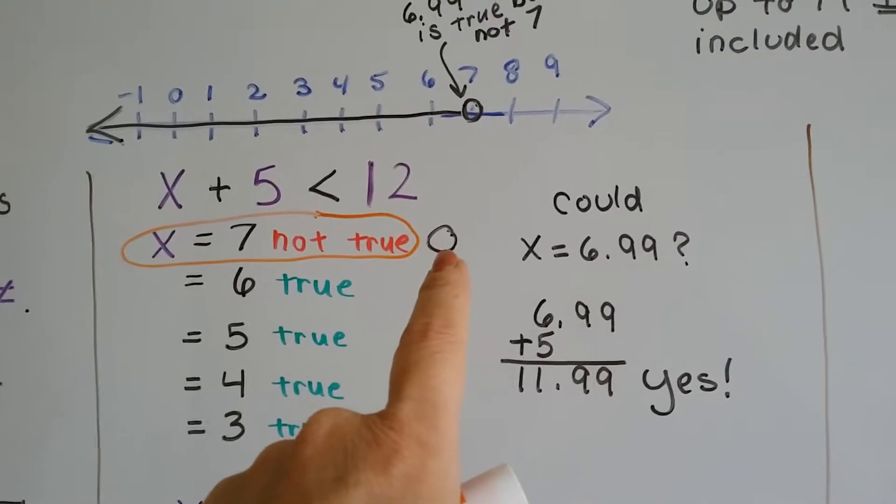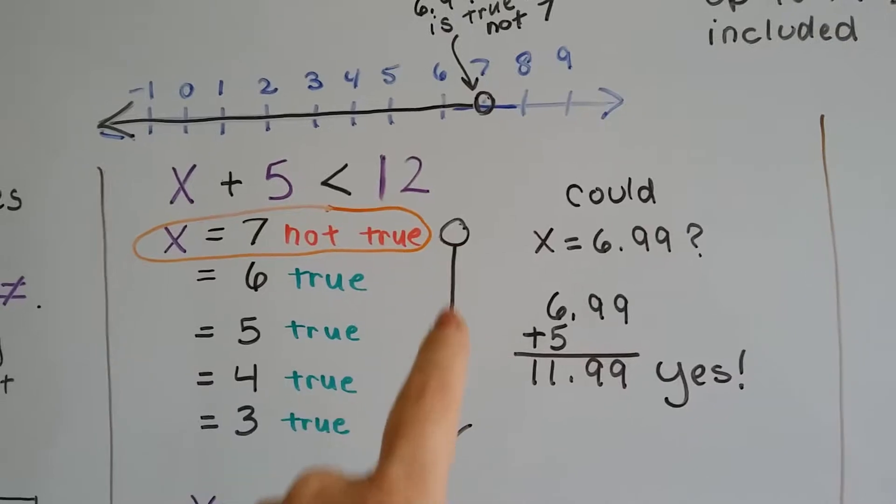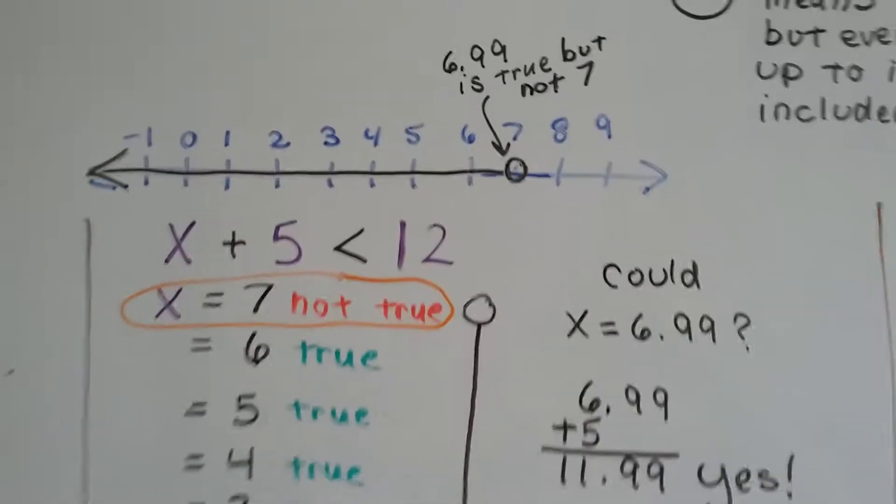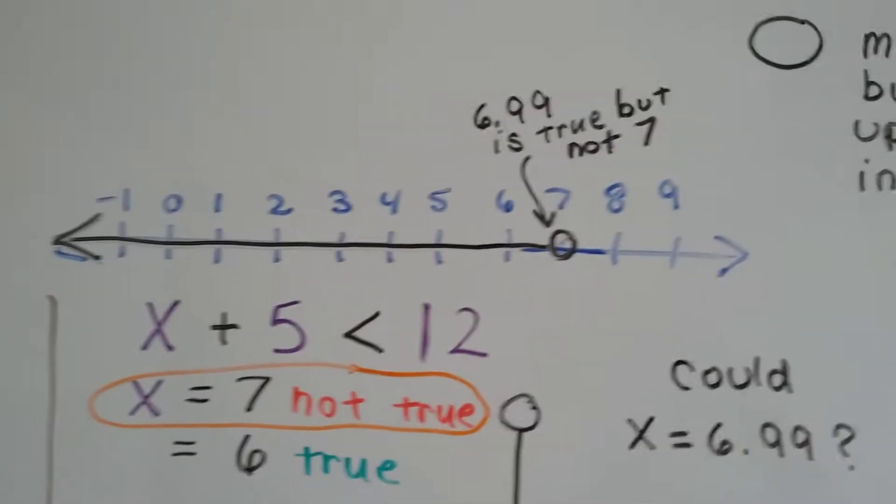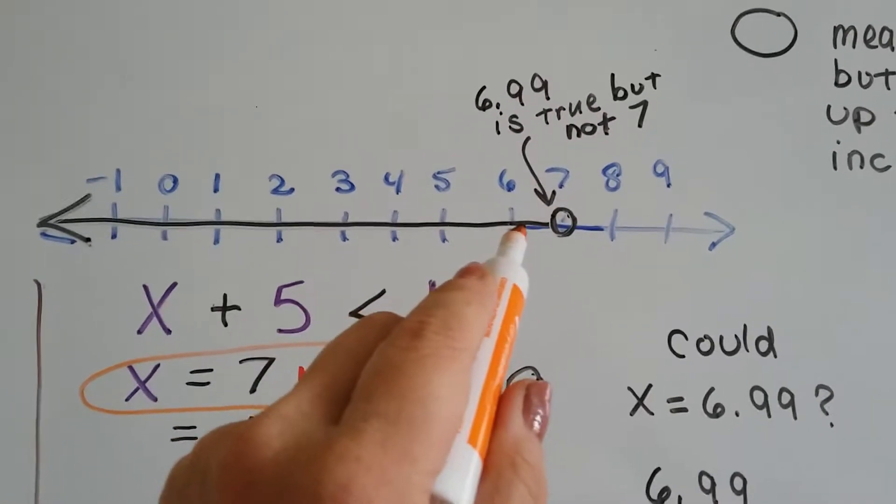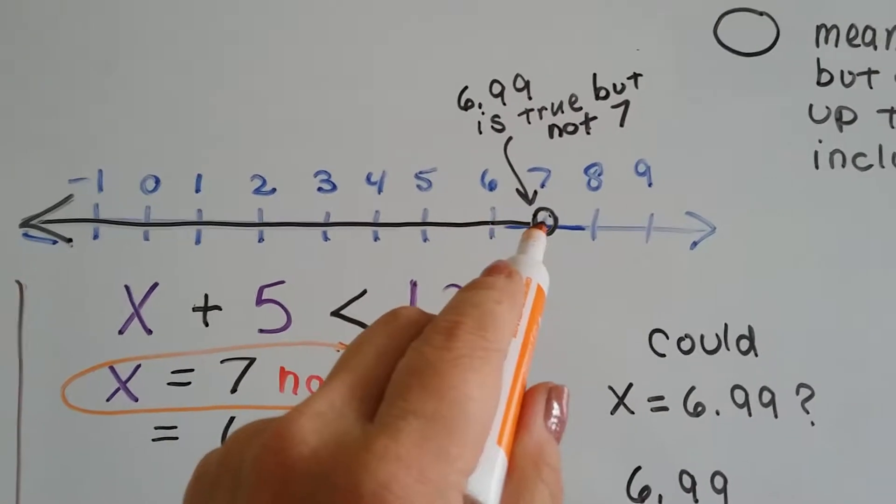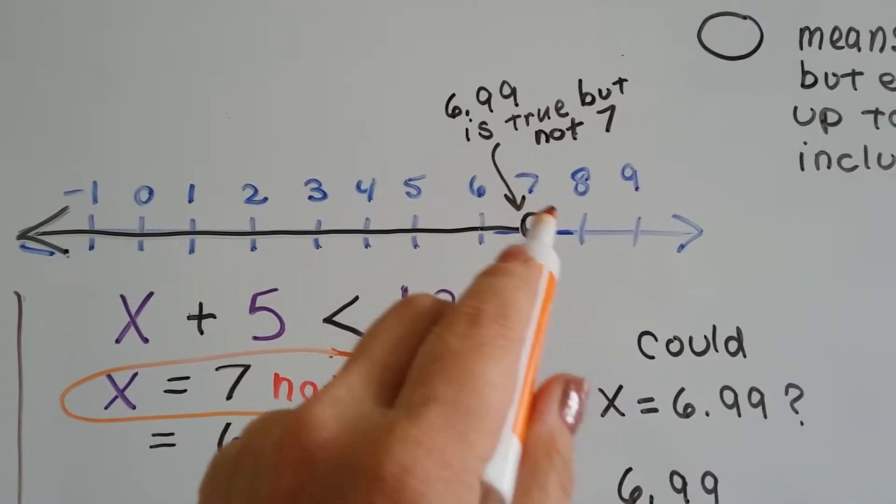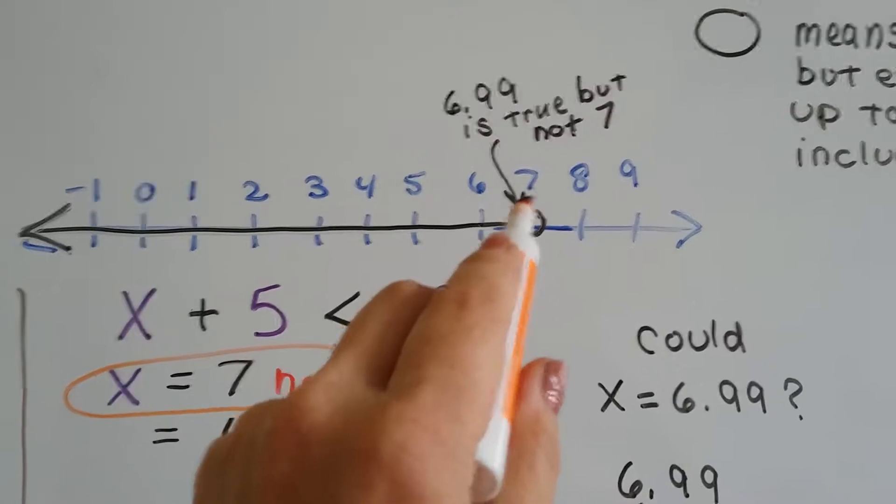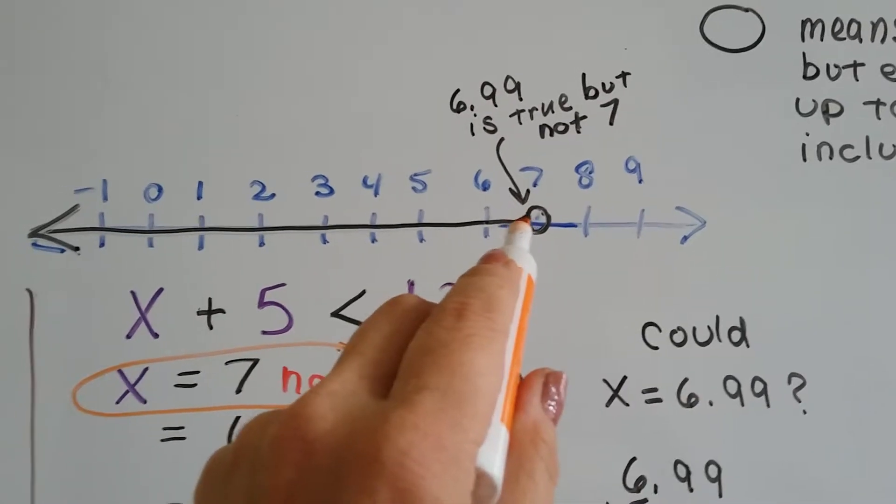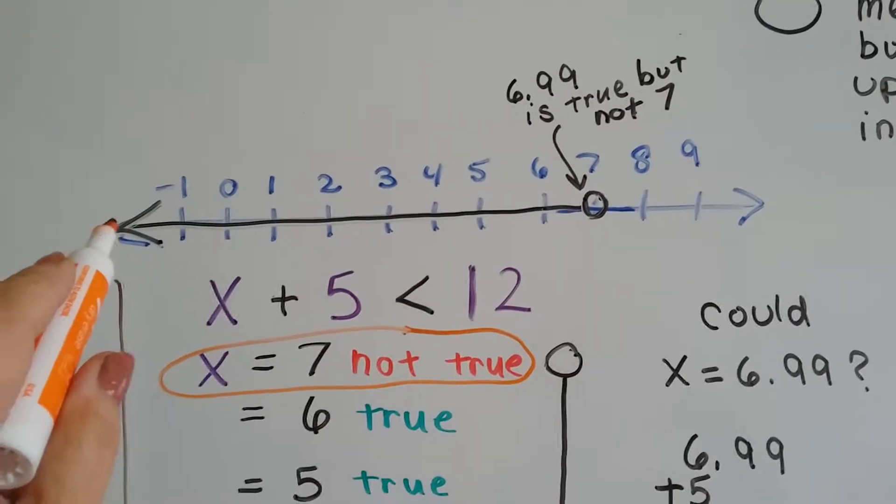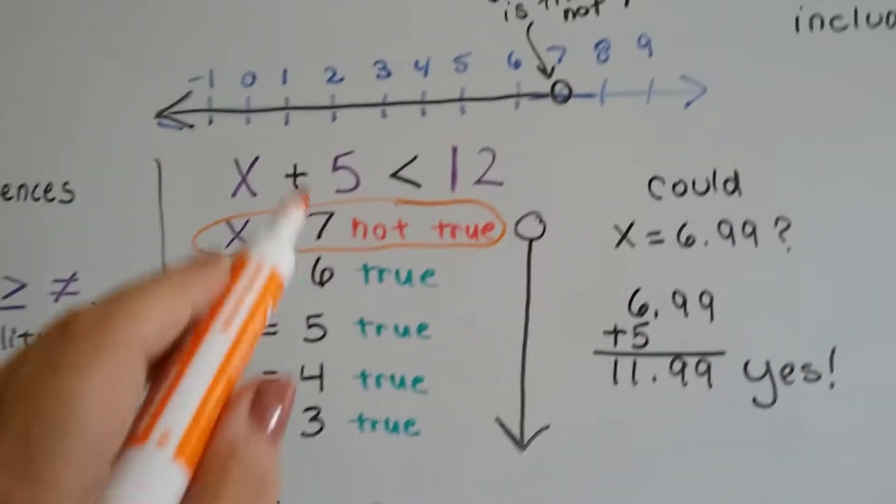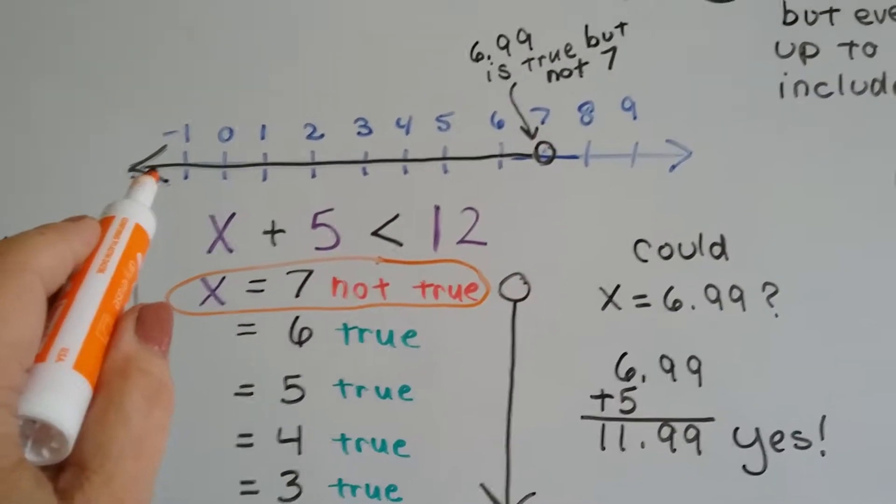So what we do is we put a circle for the 7, and then we draw an arrow showing that everything else is true. So on the number line, in order to show that 6.99 is greater than 6 and that it's included, we have a circle around the 7 showing 7's not true, but 6.99 is, and every number that follows it is true, every number that is smaller than that is true, going even into the negatives.